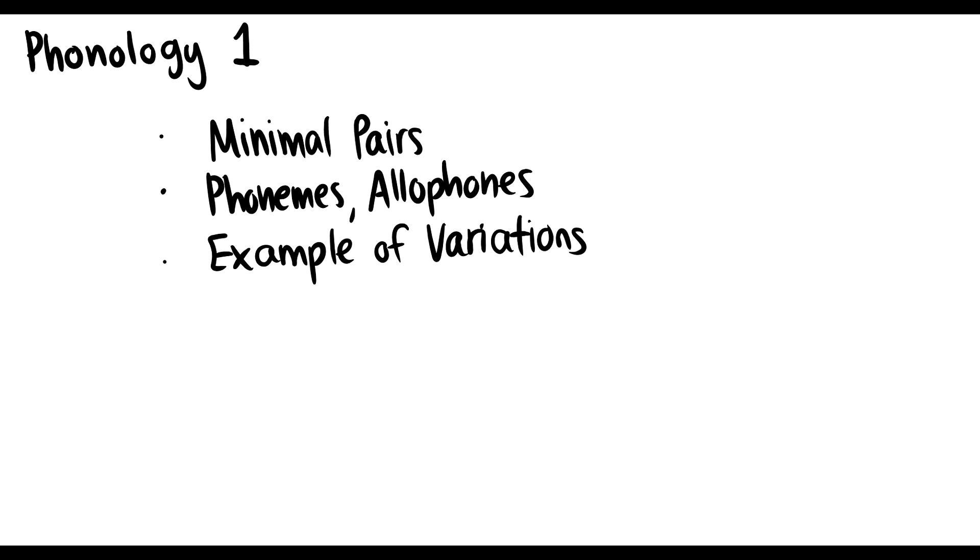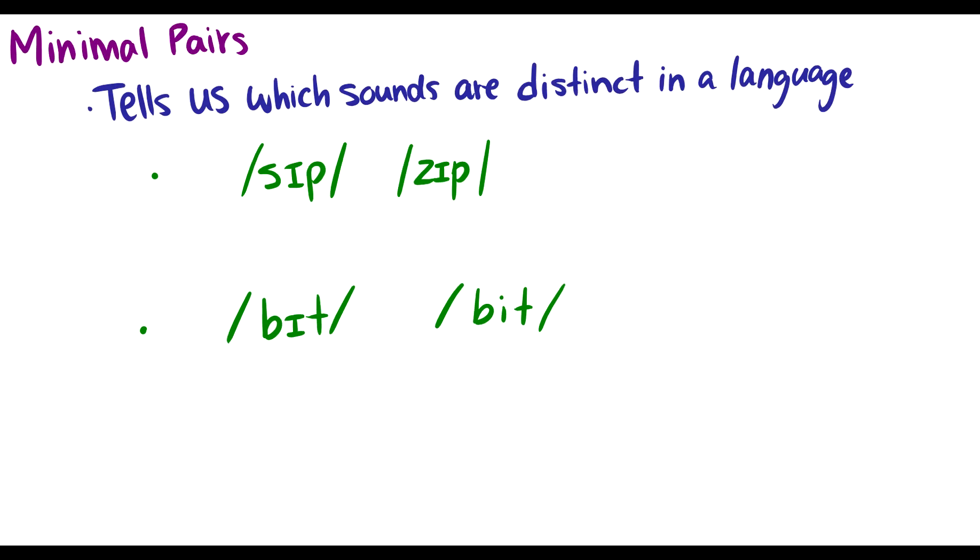So minimal pairs. Minimal pairs uses phonetics and we find two words that are similar except for one sound and we see if those words have different meanings. So this sounds weird coming from an English perspective but once we do a couple examples I'll explain how this works with other languages and how it can be useful.